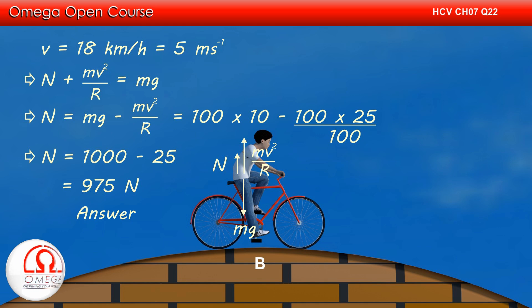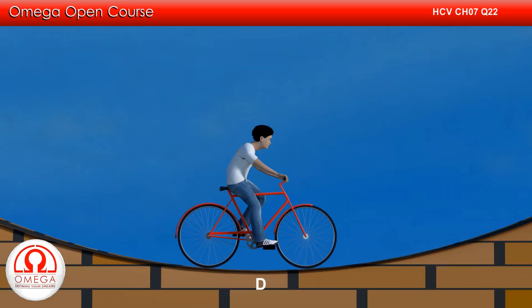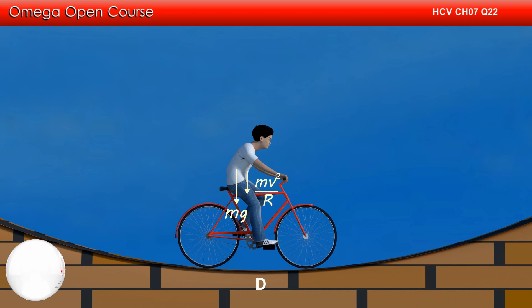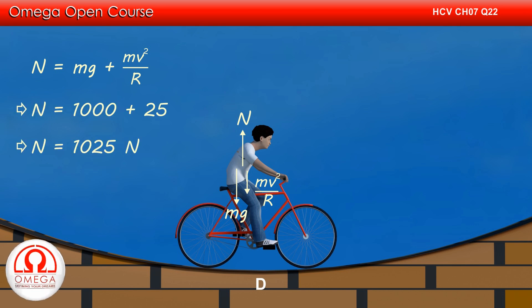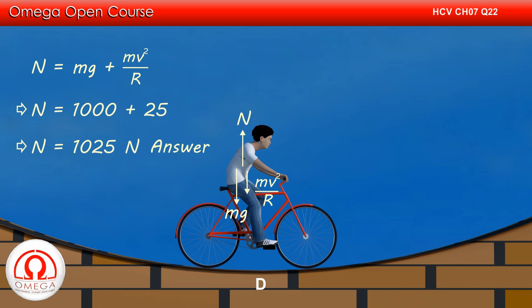Now let us draw the free body diagram of the cycle-rider system in the frame attached to the cycle when the cycle is at point D. The gravitational force Mg acts in the vertically downward direction. Since the center of the circular path on which the cycle is moving is up above the road, the centrifugal force in this case acts in the downward direction, with magnitude Mv²/R. The normal reaction from the road acts in the upward direction. Balancing the forces, we get N equal to 1000 plus 25 or 1025 Newtons. Thus, the normal at point B is 975 Newtons and at point D is 1025 Newtons. This is the answer to part A.